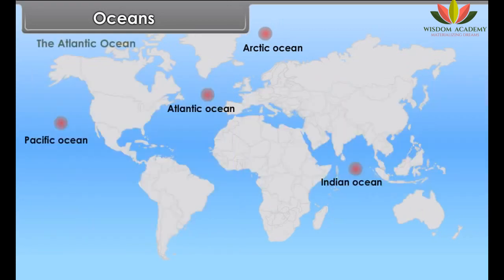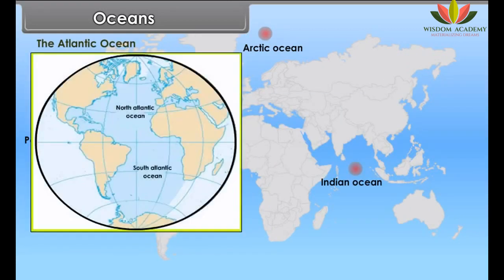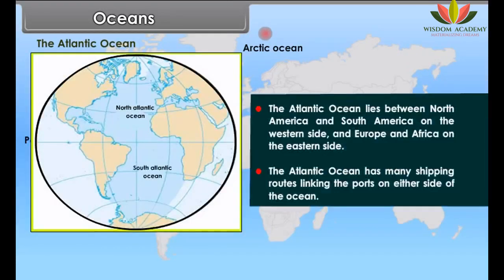The Atlantic Ocean lies between North America and South America on the western side, and Europe and Africa on the eastern side. The Atlantic Ocean has many shipping routes linking the ports on either side of the ocean.